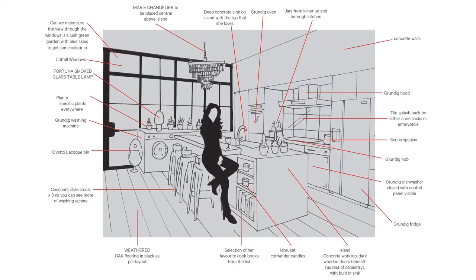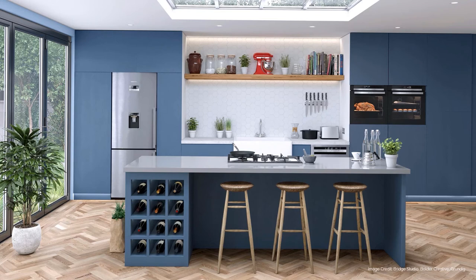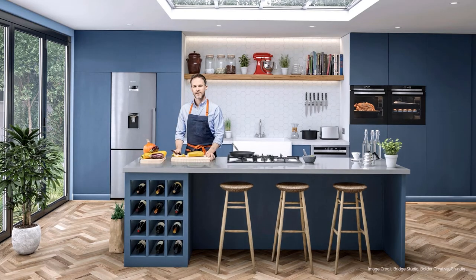Each brief was very detailed — specifying exterior views, window specifications, plants, flooring, and even the books on the bookshelf. Finding a real location to match that spec would have been really difficult, and constructing the kitchens wasn't possible within the time frame. What did prove to be a good approach was building a 3D kitchen and then using physical photography to place our influencer into the image.